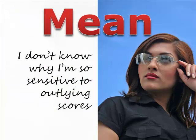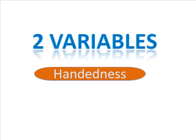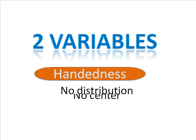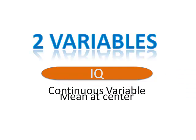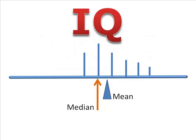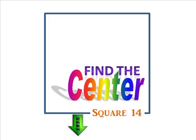Unlike the median and mode, the mean is very sensitive to outlying scores. We started with two variables: handedness and intelligence. Since handedness is a categorical variable, there is no distribution of scores and no center to that distribution. IQ, our operational definition of intelligence, is a continuous variable, and we could find its center. We know from the graphs in square 13 that it is positively skewed, and the mean is a bit above the median. In the general population, we'd expect the mean IQ to be 100; in our imaginary study, the IQ for our sample was 105. Now that we have a center, we will look at variability next.